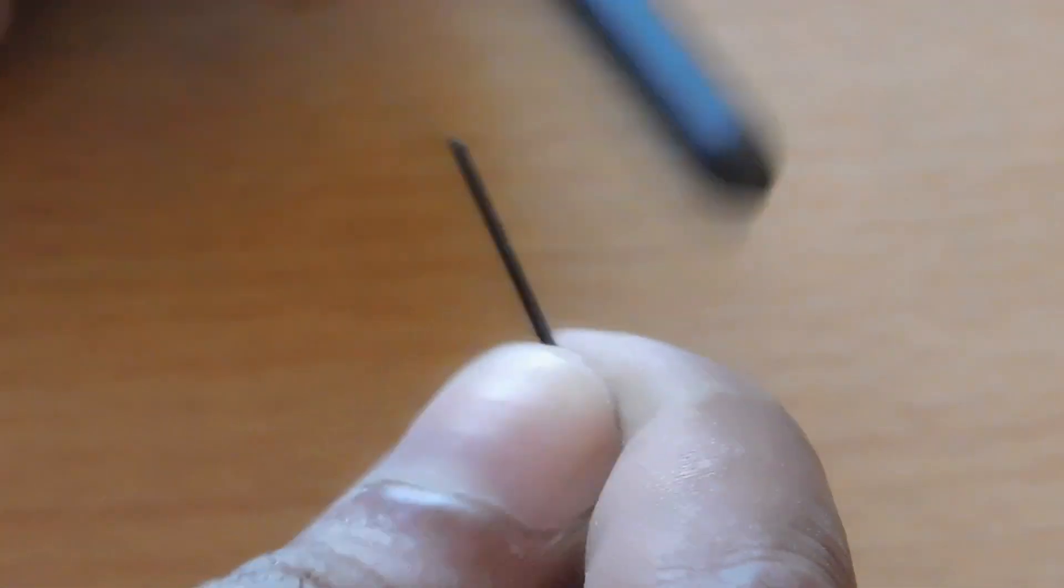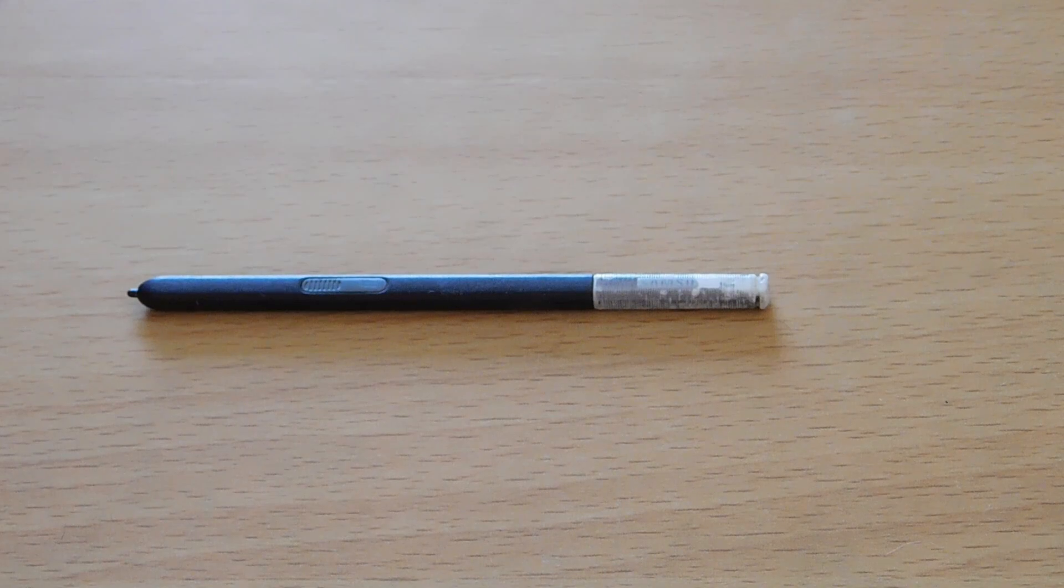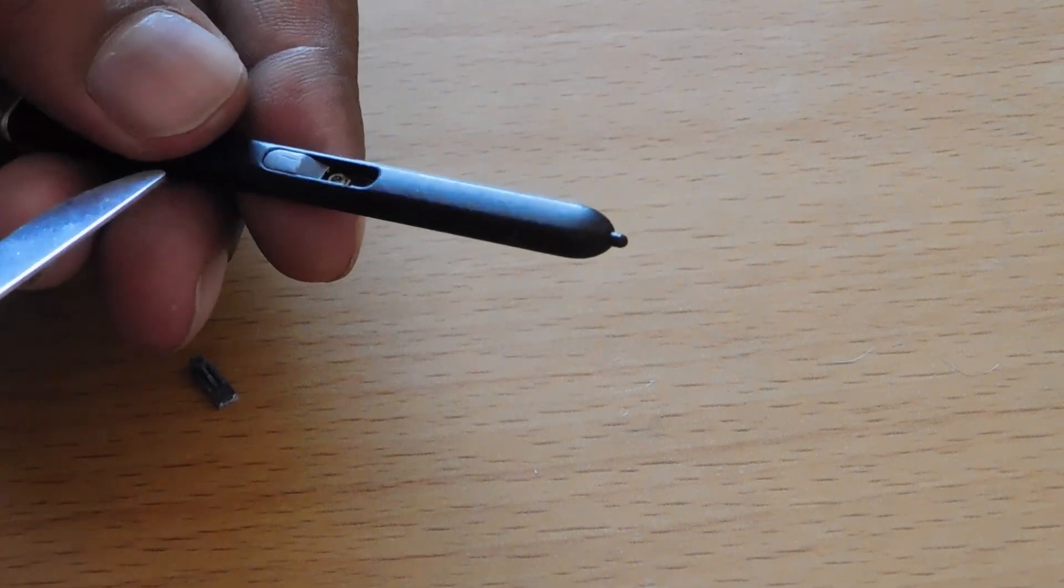Now there is no other way you can disassemble this S Pen in a perfect manner. The only thing you can do to open it is crush the plastic body carefully in order to not damage the circuit.